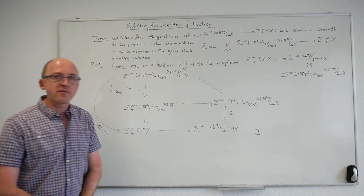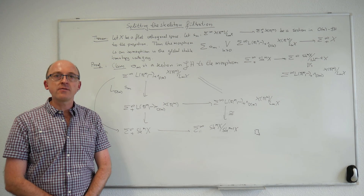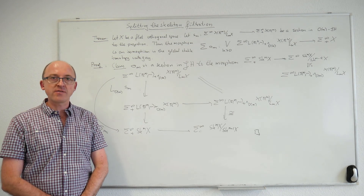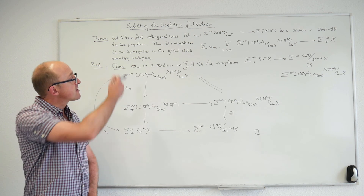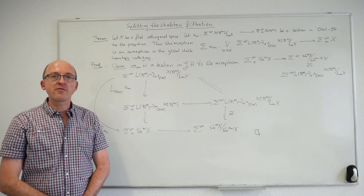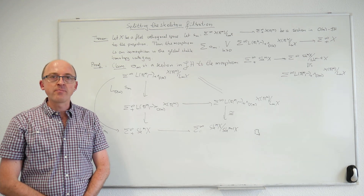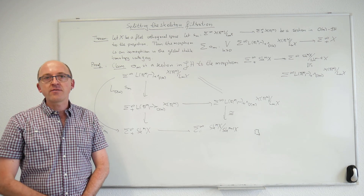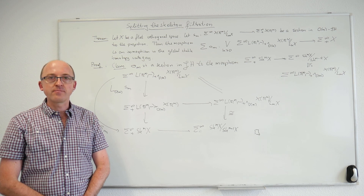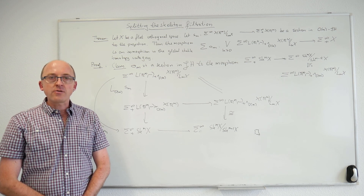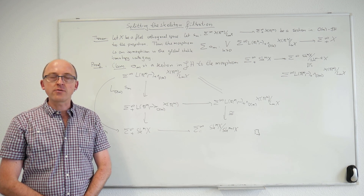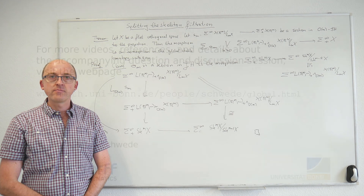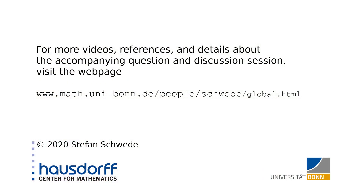This concludes the proof of the abstract splitting result based on the strong hypothesis on the skeleton filtration. In the next lecture I will verify that the hypotheses of the splitting result are satisfied for O and for certain generalizations, giving the global refinements of Miller's splittings. Thank you for your attention.